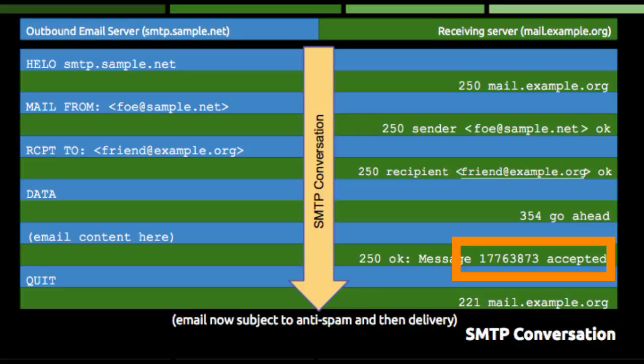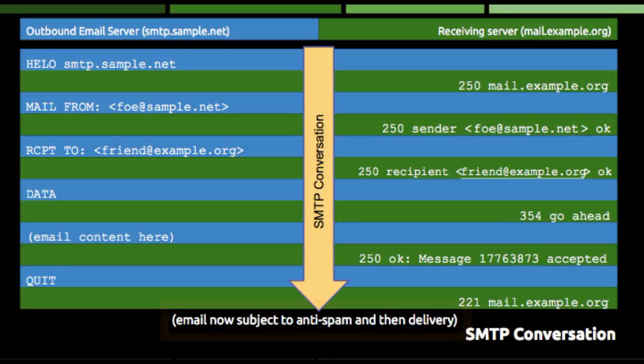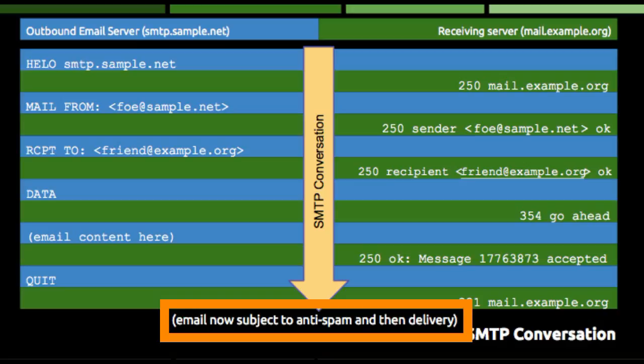The operator of the outbound server can contact the operator of the receiving server and ask what happened to the piece of email identified as number 17,763,873. The operator on the other end can track down the fate of the email using that supplied number. In stripped-down form, this is how SMTP works. After the receiving server accepts the piece of email, the email is likely subject to things like anti-spam scanning, DMARC checks, and then maybe on to delivery to an inbox.